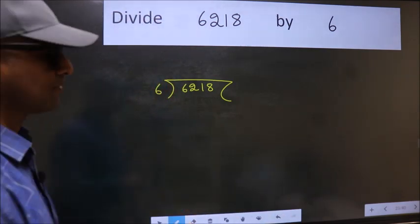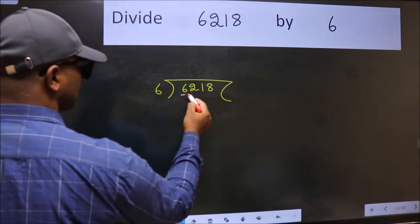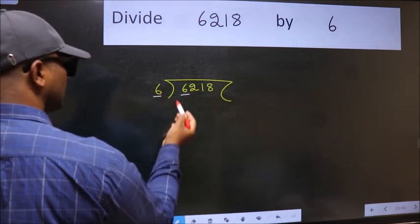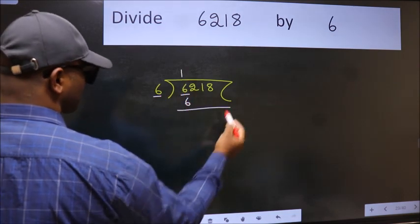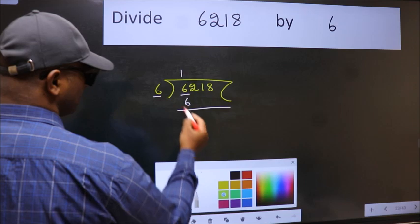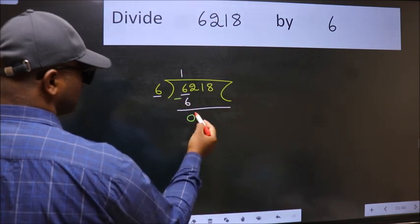Next, here we have 6 and here 6. When do we get 6 in 6 table? 6 once 6. Now we should subtract. We get 0.